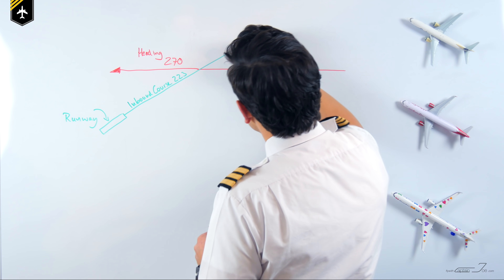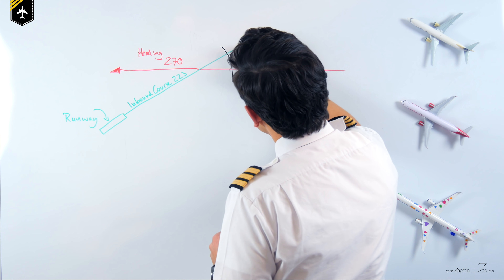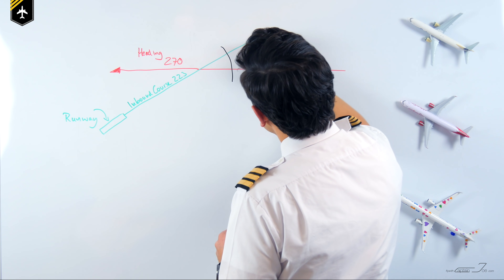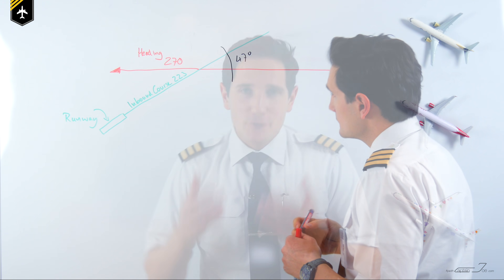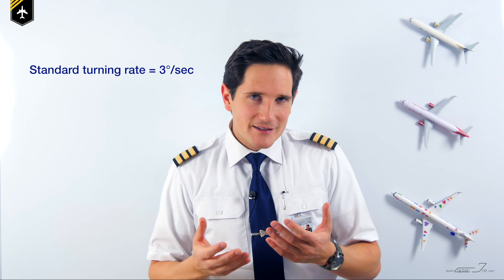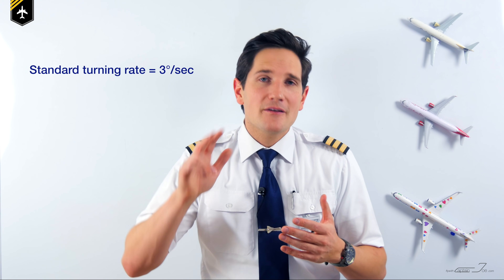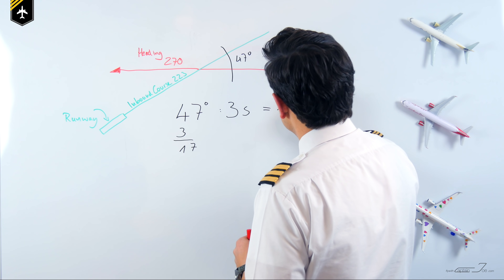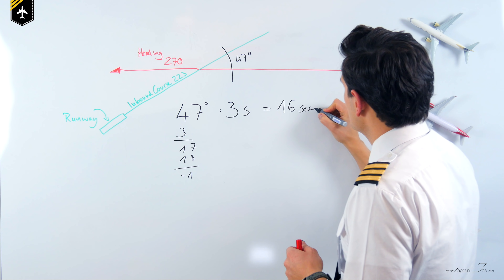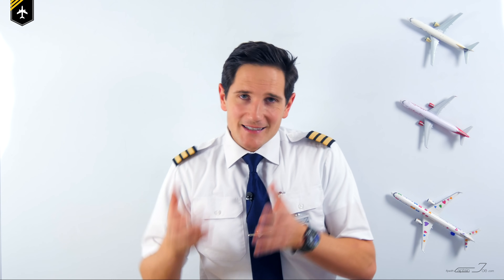Looking at the picture, here is your current heading and the final inbound course — we are practicing without wind at the moment. These two lines cross at an angle of 47 degrees, meaning we would have to turn 47 degrees to the left to come established on the localizer. Here's a rule of thumb to help you not under or overshoot the localizer beam: the standard turning rate of most planes is 3 degrees per second, so 47 degrees divided by 3 is roughly 16 seconds — meaning your turn will take 16 seconds.